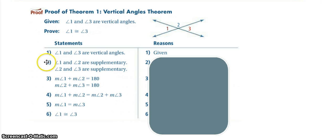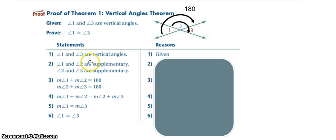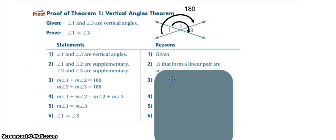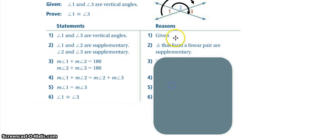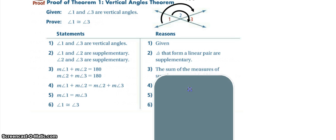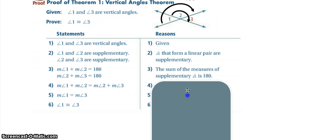We know that angle one and two are supplementary because they together would make 180, and likewise angle one and three are supplementary because they together would make 180. How do we know that angles are supplementary? We know they're supplementary because they form a linear pair. When two angles combine to make one straight angle, that's a linear pair, and that makes them supplementary. Because they're supplementary, we know that they equal 180 degrees — that's the definition of supplementary angles.